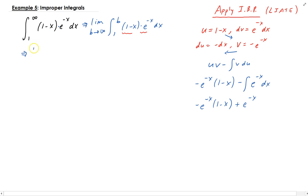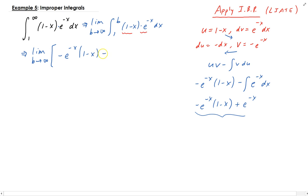Going back up, we need to take this result, plug it back in, and then evaluate from 1 to b. So we have: negative e to the negative x times (1 minus x) plus e to the minus x, evaluated from 1 to b.